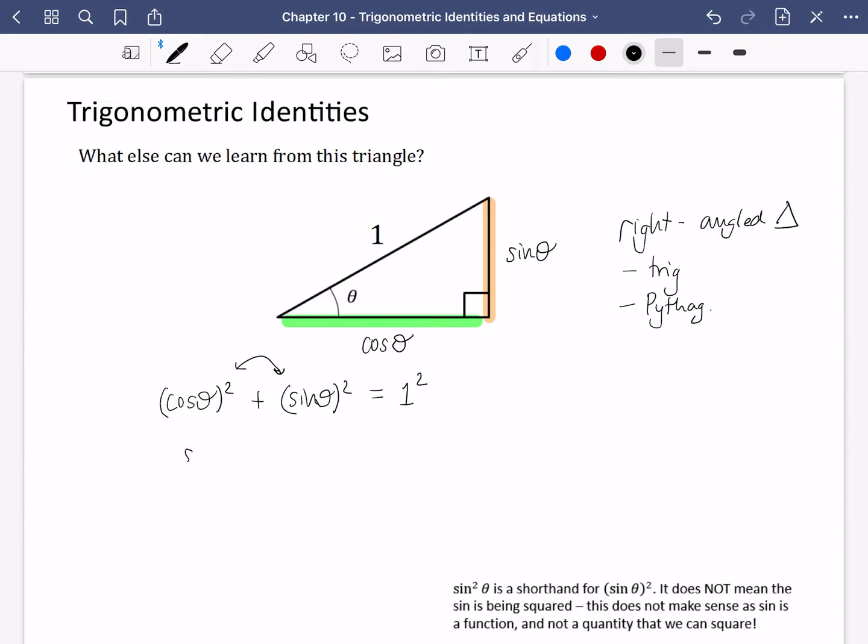Now, sine theta squared, we actually write as sine squared theta. And why do we do that? Well, one, mathematicians are lazy, and they don't want to use brackets every time. Two, if you write sine theta squared, that is confusing and makes me think I'm doing the sine of the angle squared, not the overall thing being squared. So I have sine squared theta, and that's how we say it, plus cos squared theta equals one. So what we have come up with here is a very, very, very important trigonometric identity. Sine squared theta plus cos squared theta equals one.